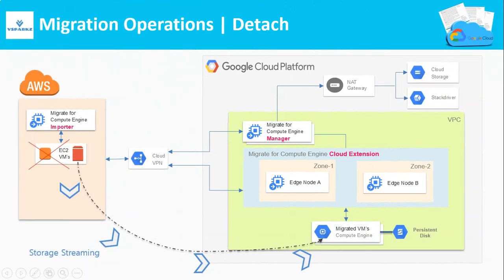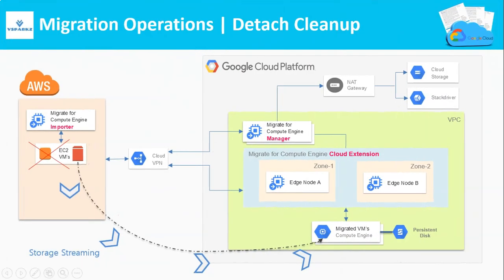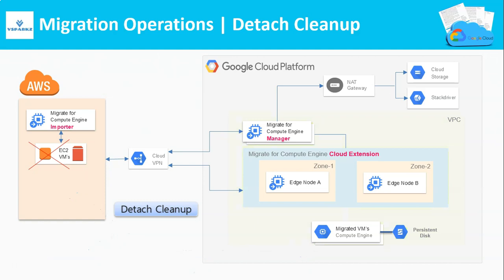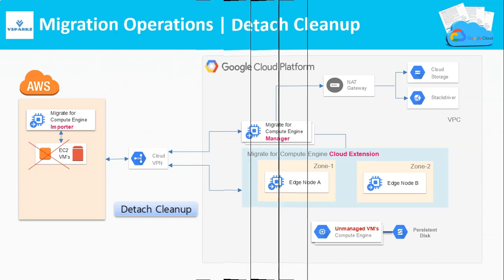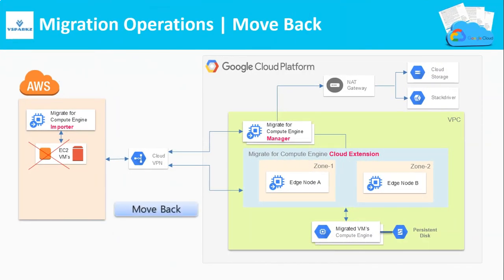Next is to perform a detach operation, which attaches the native disks to the Compute Engine VMs and starts the VMs in Google Cloud. After the VMs are detached and your testing is complete, you can start the detach cleanup. Each VM is then marked as unmanaged by Migrate for Compute Engine so that you can freely use the migrated VMs in Google Cloud. If the validation fails, you can do a move-back of your VMs to the source.